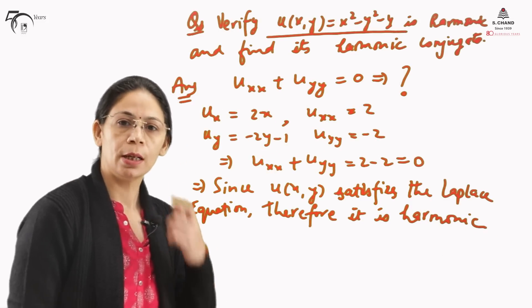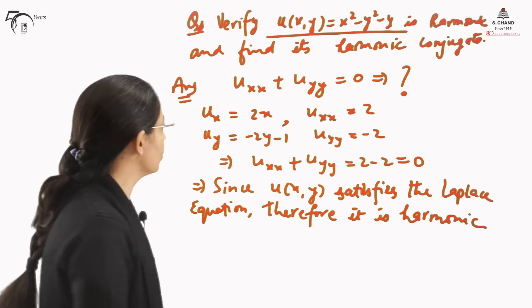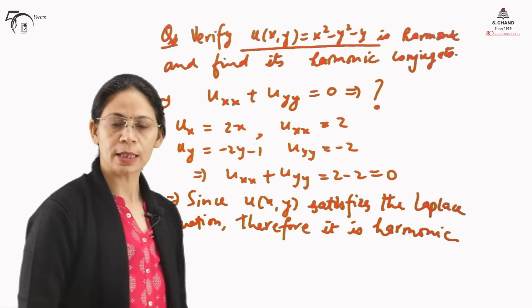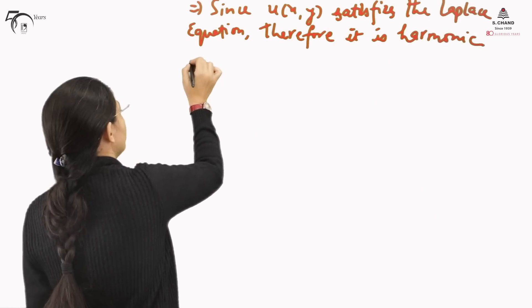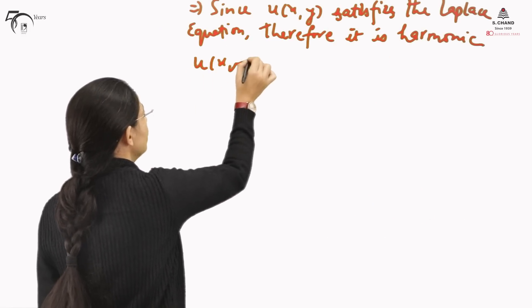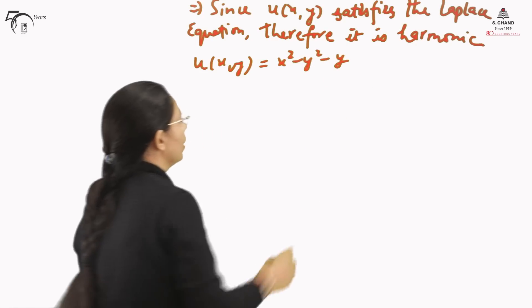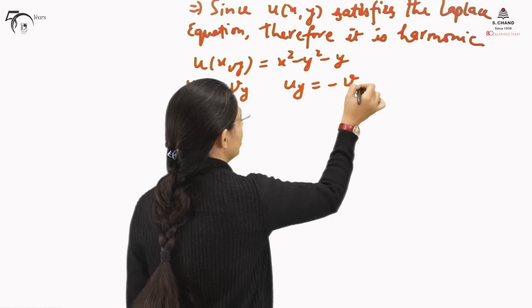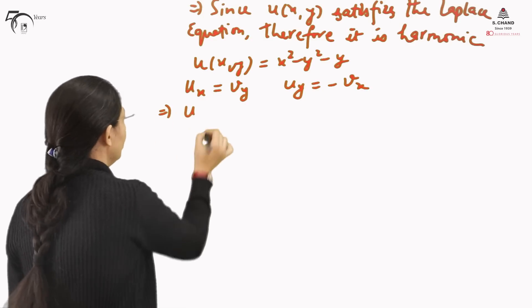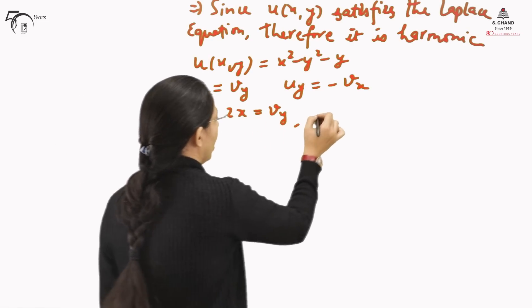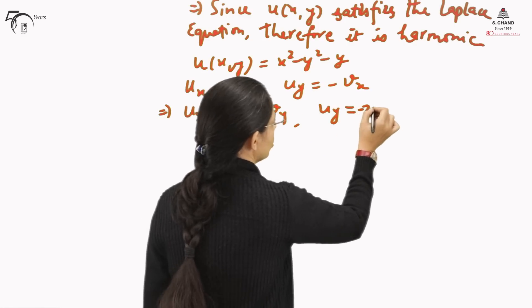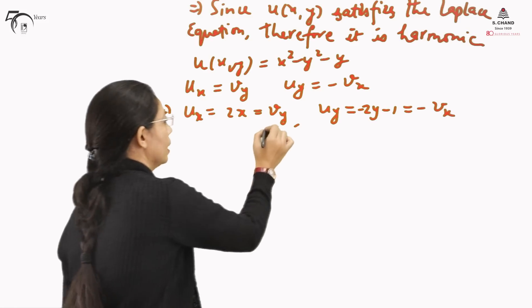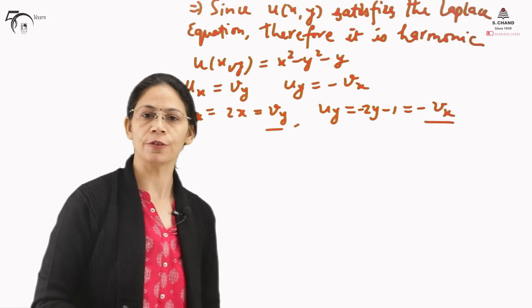Since the function is harmonic, we can find its harmonic conjugate using the Cauchy-Riemann equations. U(x,y) = x² − y² − y. The CR equations state U_x = V_y and U_y = −V_x. So U_x = 2x = V_y (relation 1), and U_y = −2y − 1 = −V_x, giving V_x = 2y + 1 (relation 2).